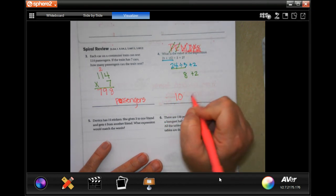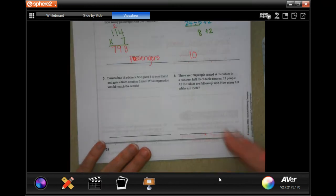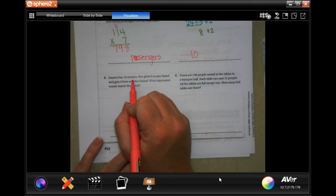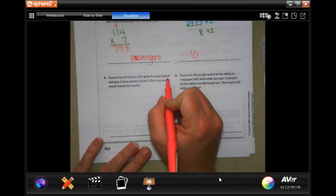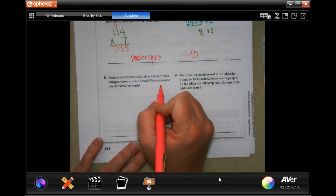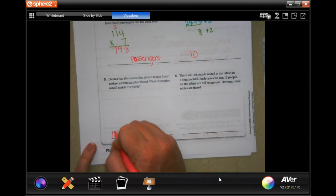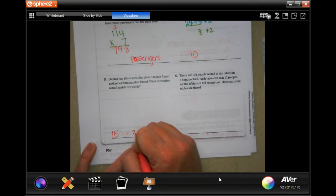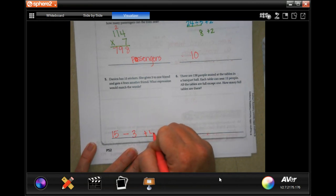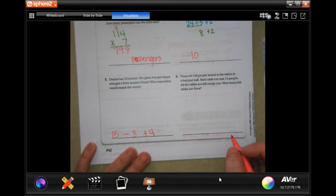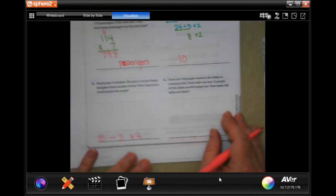All right, Danica has 15 stickers. She gives three to one friend and gets four from another friend. What expression would match the word? Well, she starts with 15 stickers, she gives away three, but then she gets four. That's it. Super easy guys, don't make it harder than it's gotta be.